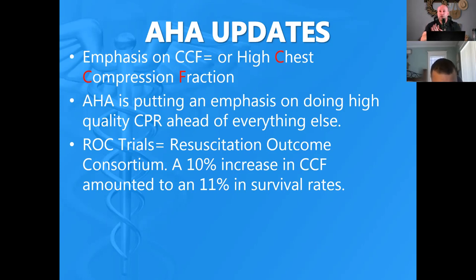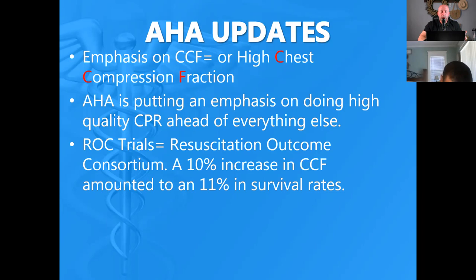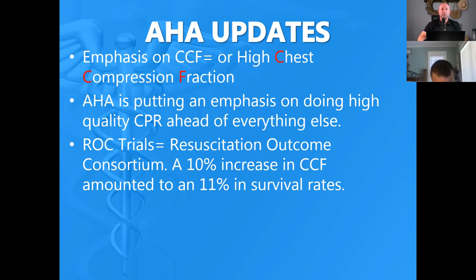The CPR rate — it used to be at least 100. Now the rate is between 100 to 120. You've heard 'Another One Bites the Dust' by Queen — that beat is at about 100 to 120 beats per minute. For compression ratio: one-rescuer CPR is 30 to 2 for infants, children, and adults. Two-rescuer CPR for infants and children is 15 to 2.